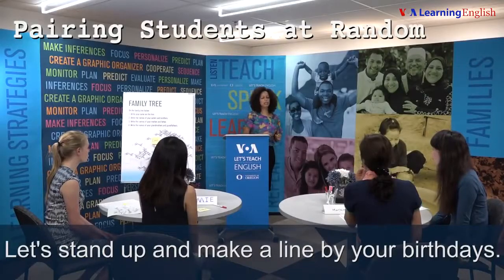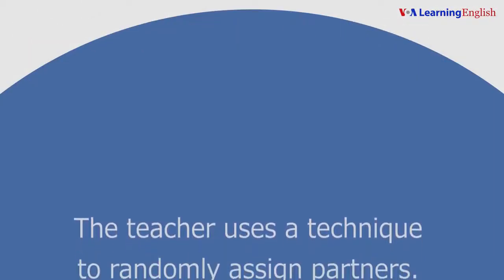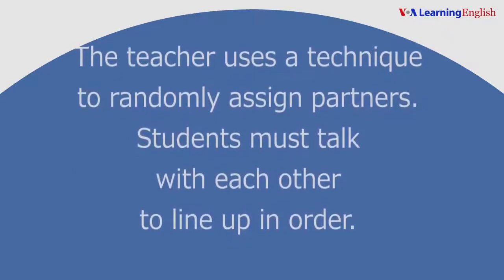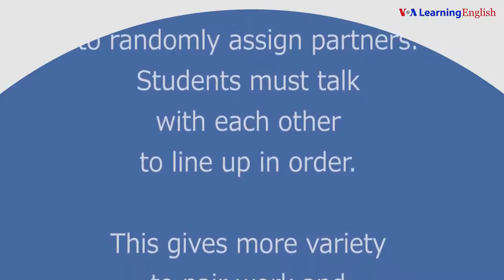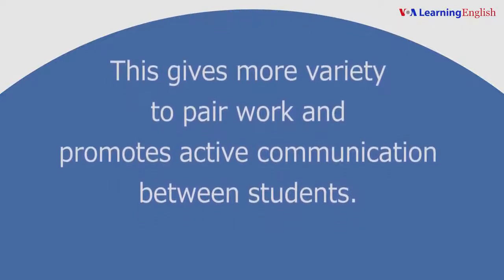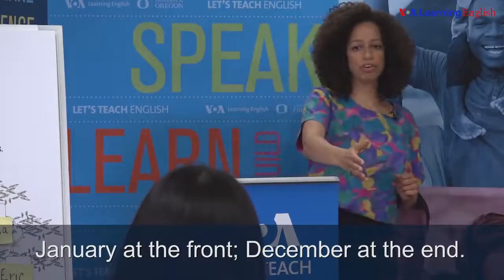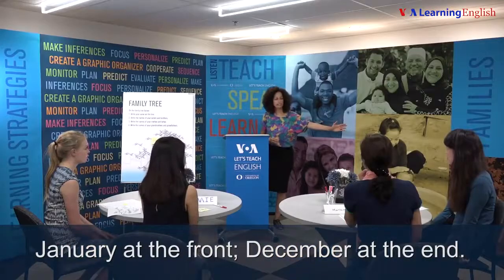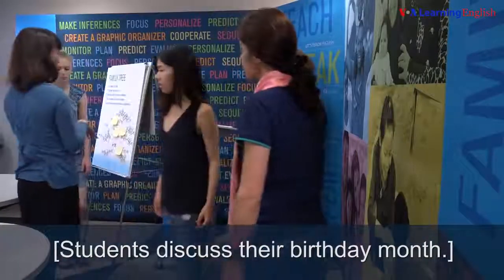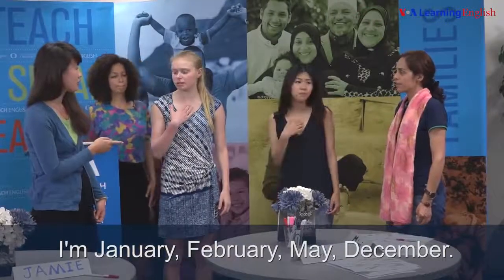Let's stand up and make a line by your birthdays. Pairing students at random: the teacher uses a technique to randomly assign partners. Students must talk with each other to line up in order. This gives more variety to pair work and promotes active communication. The person across from you is your partner. January at the front, December at the end. Students call out: February, January, January, February, May, December.